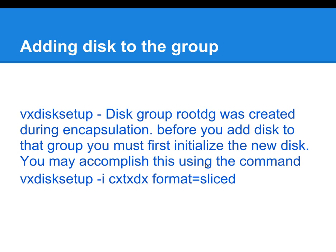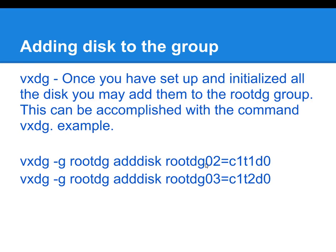The reason for using slice format is that the root file system has a special requirement for a private region — similar to an iNode — where a lot of Veritas information is stored. The slice format will enable the disk to have that private region. After initializing all the disks, the next command to use is VXDG, which actually brings the disk into the Veritas disk group.